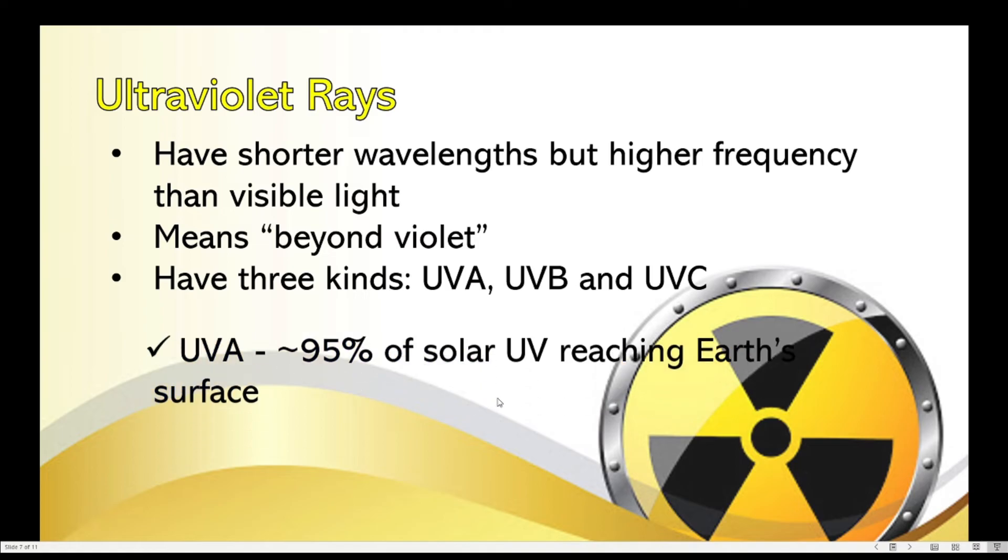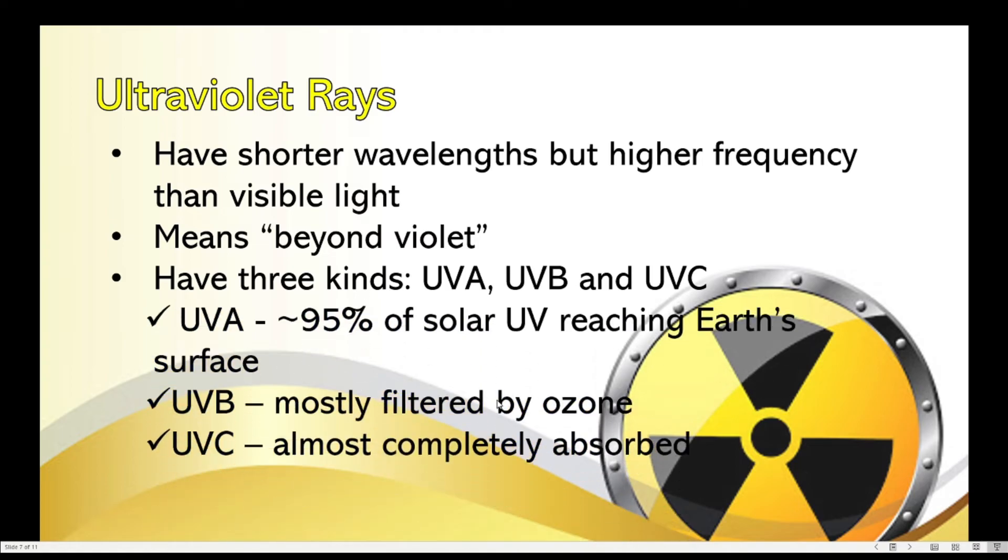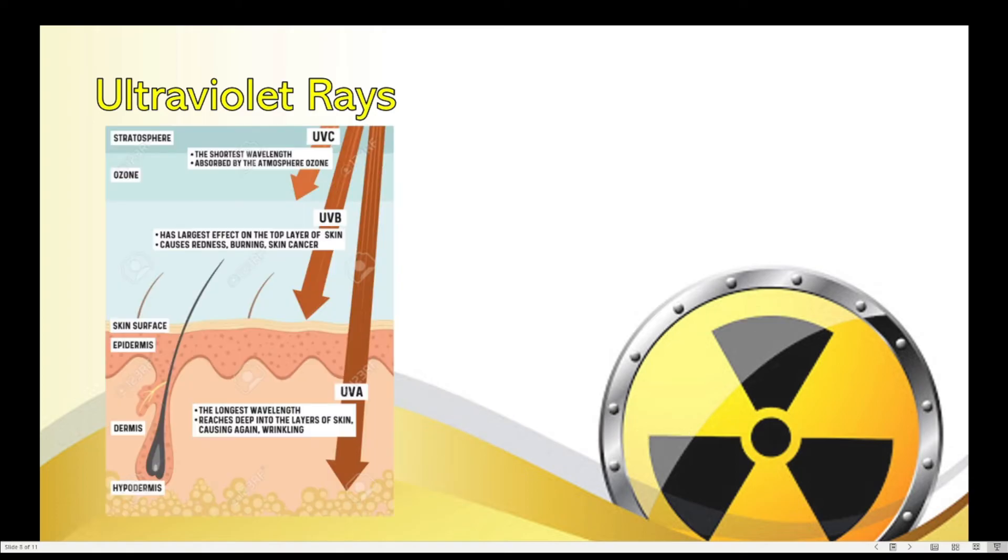Now, how do we differentiate the three? All of these come from the sun. However, not all these three can reach the surface of the Earth. Most of the solar UV or solar ultraviolet that would reach the Earth's surface is UVA. Why? Because UVB and UVC would most definitely be absorbed or filtered by the atmosphere. However, we can see in the diagram that UVA is the type of ultraviolet that can penetrate up to the inner layers of the skin.